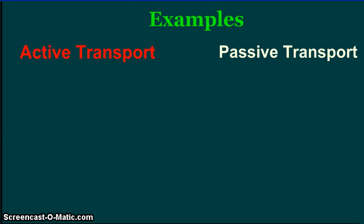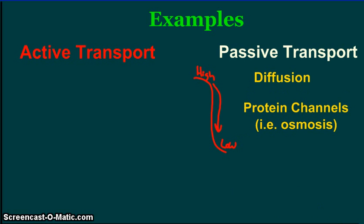You will need to be familiar with the examples of active transport and the examples of passive transport. Passive transport happens in two ways: simple diffusion, in which molecules move from an area of high concentration to a low concentration, which does not require energy. Passive transport can also occur through protein channels, and protein channels allow certain molecules, like water, to move through.